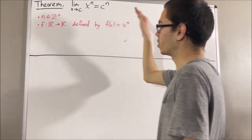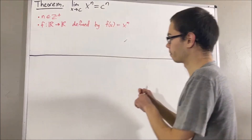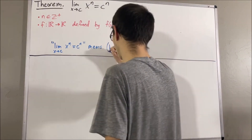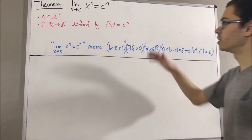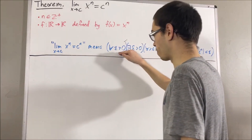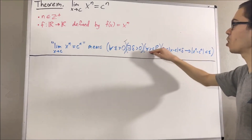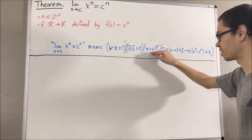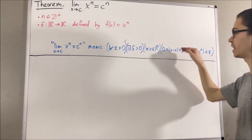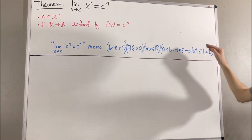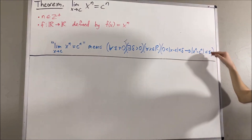By the epsilon-delta definition of a limit, this means the following: for every epsilon greater than zero, there exists a delta greater than zero, such that for all x in the real numbers, if zero is less than the absolute value of x minus c is less than delta, then the absolute value of x to the n minus c to the n is less than epsilon.